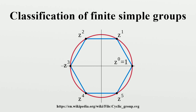Groups of two-rank two: Alperin showed that the Sylow subgroup must be dihedral, quasi-dihedral, wreathed, or a Sylow two-subgroup of U3. The first case was done by the Gorenstein-Walter theorem, which showed that the only simple groups are isomorphic to L2(q), odd q, or A7. The second and third cases were done by the Alperin-Brauer-Gorenstein theorem, which implies the only simple groups are isomorphic to L3 or U3 for odd q or M11. The last case was done by Lyons, who showed that U3 is the only simple possibility.